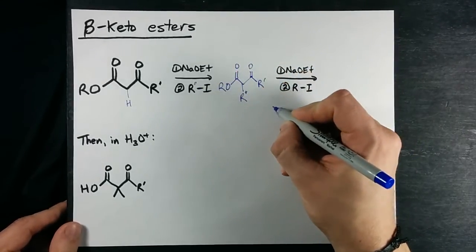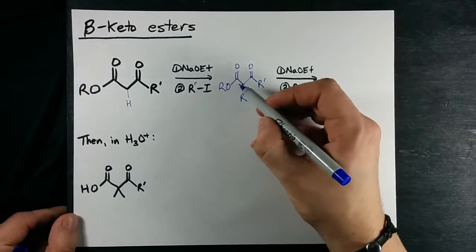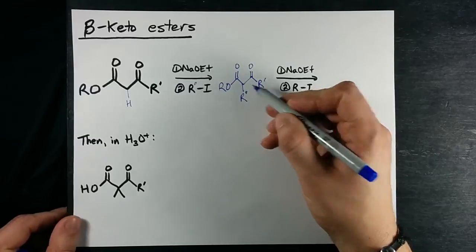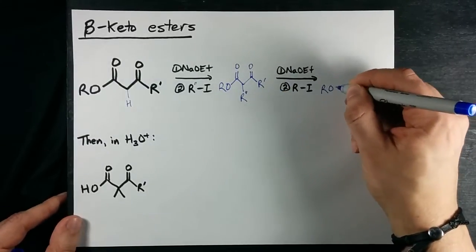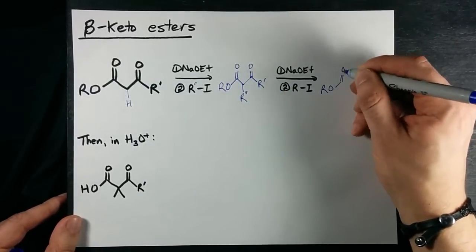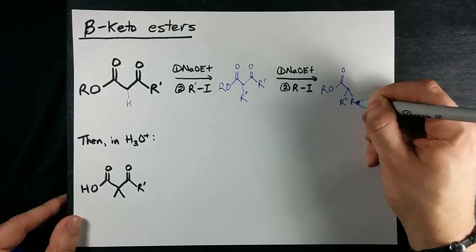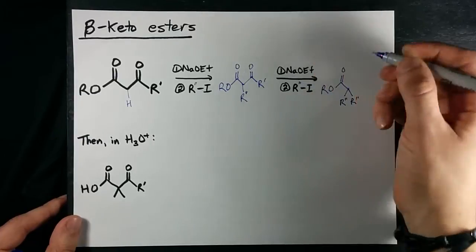Now we've double alkylated the alpha carbon. I'm going to make that R prime again as well. So we've double alkylated the alpha carbon.